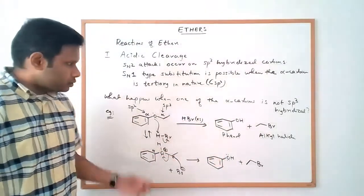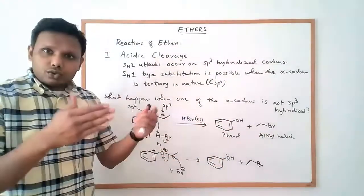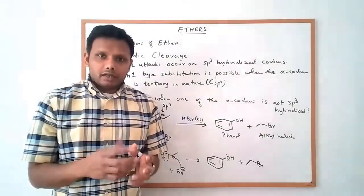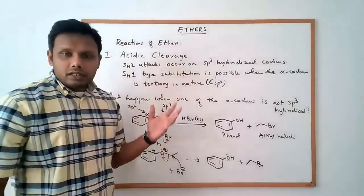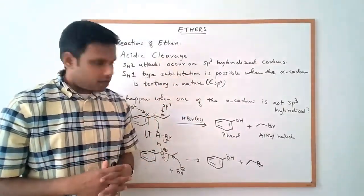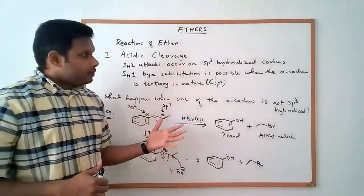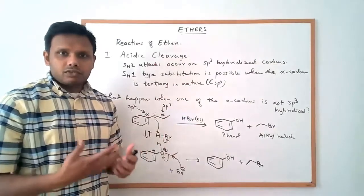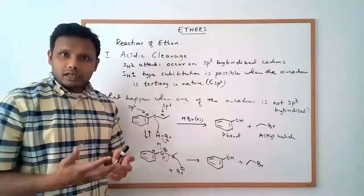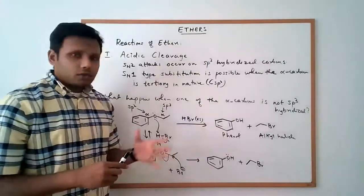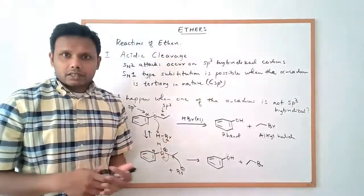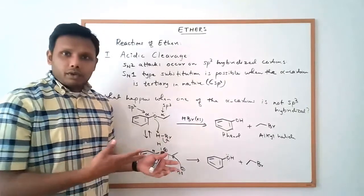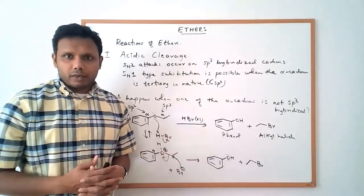For us to make two alkyl halides as products, it is important that our starting ether has two alpha carbons that are both sp3 hybridized. That is the reaction of ethers we discussed here — the acid-catalyzed cleavage of ethers — which requires very strong acids like HBr or HI under forcing conditions. I hope you all find this discussion helpful. Bye.